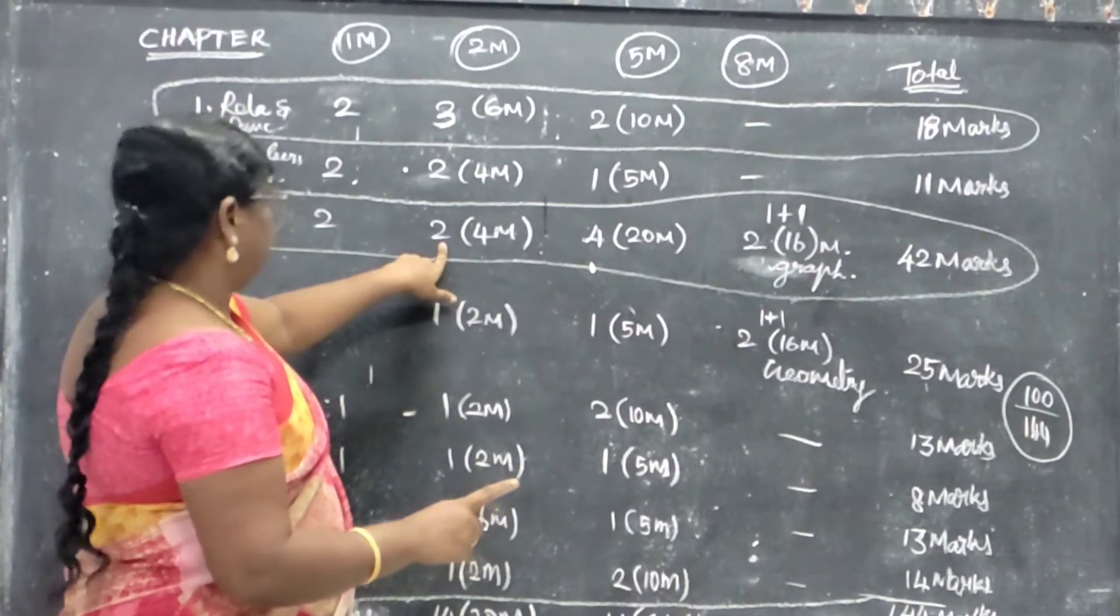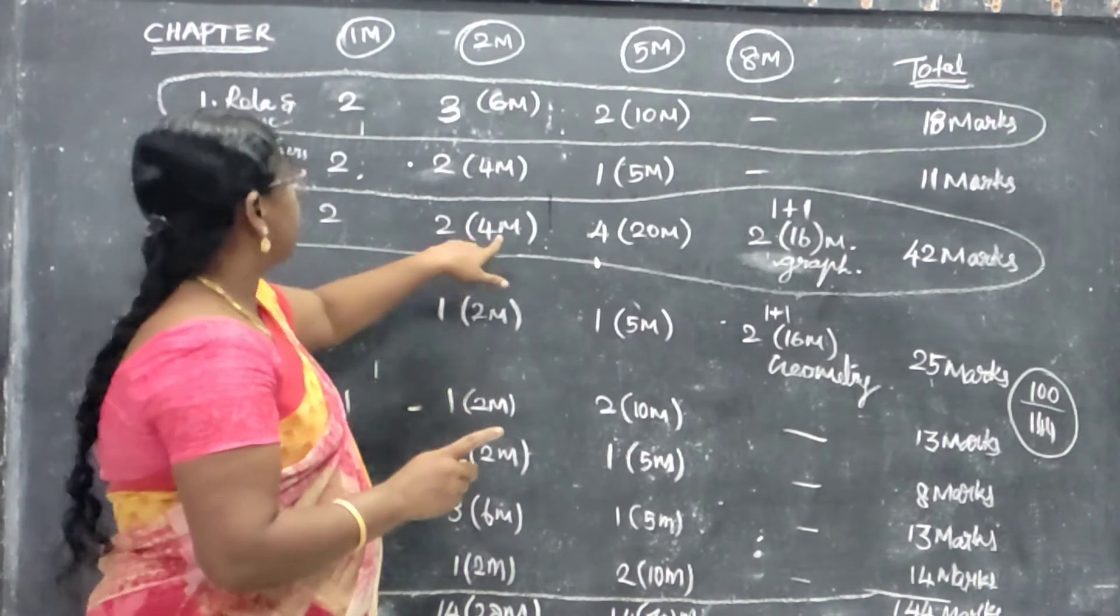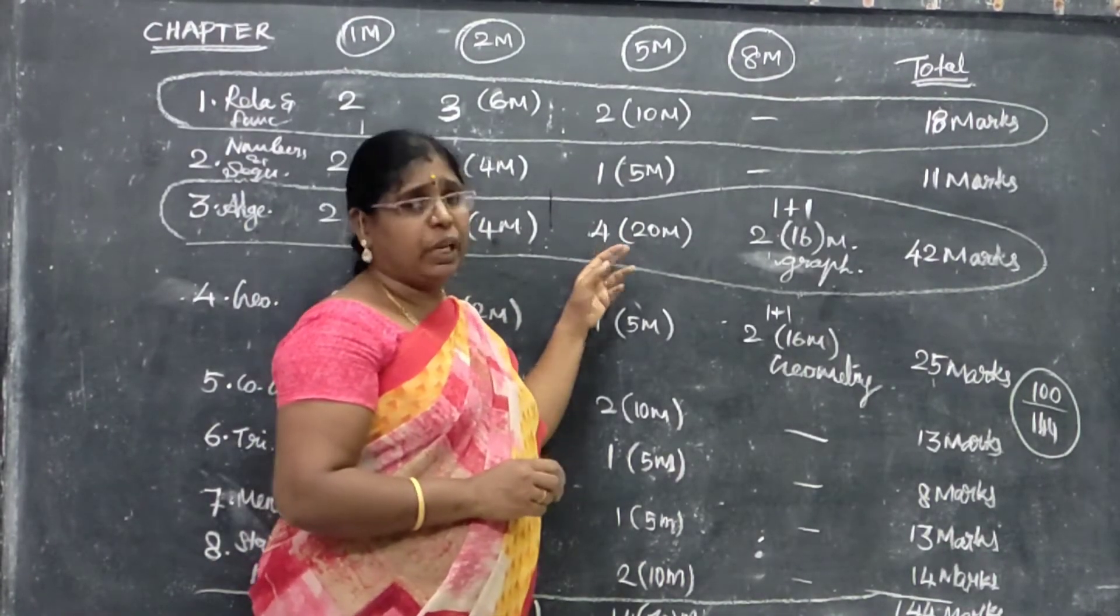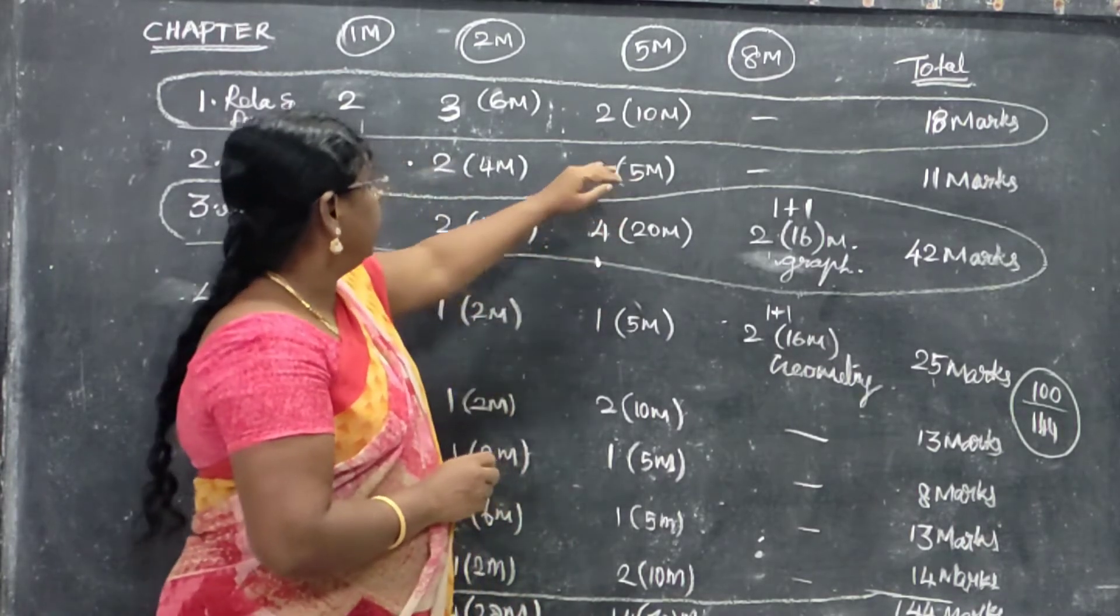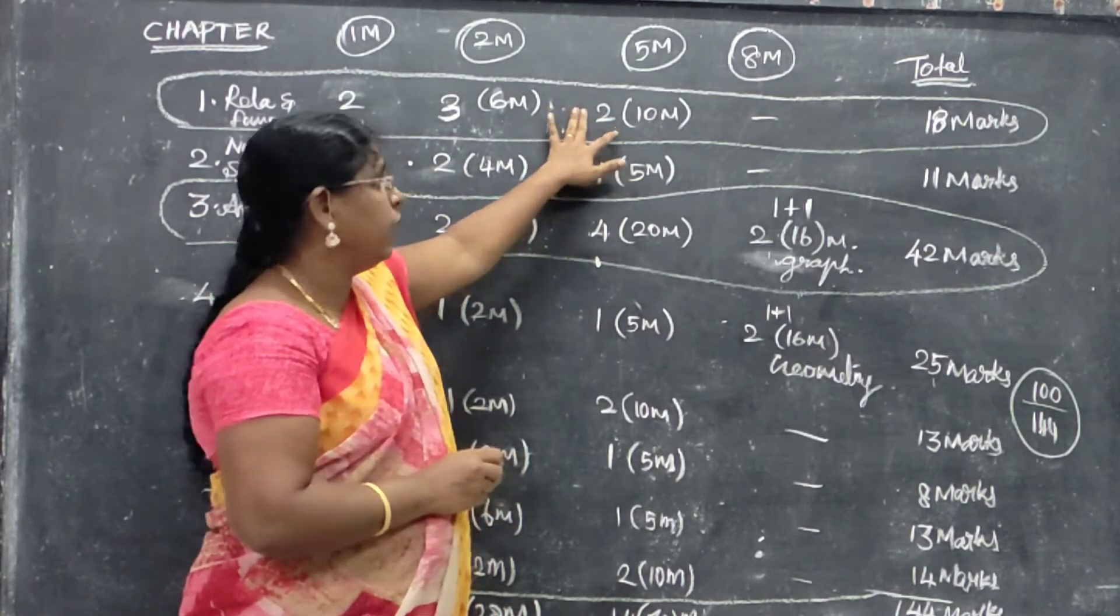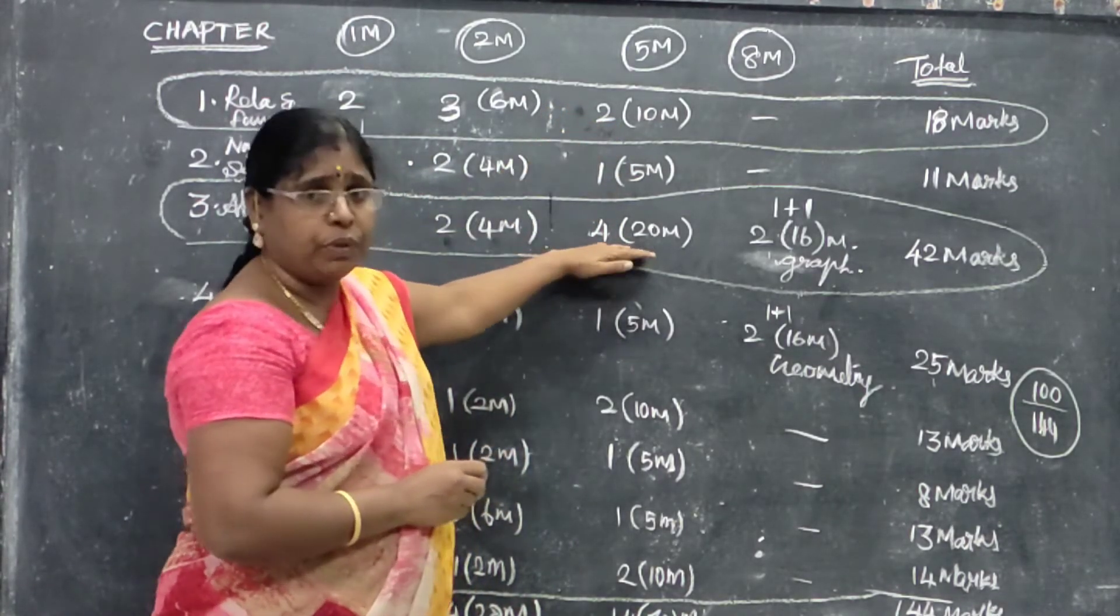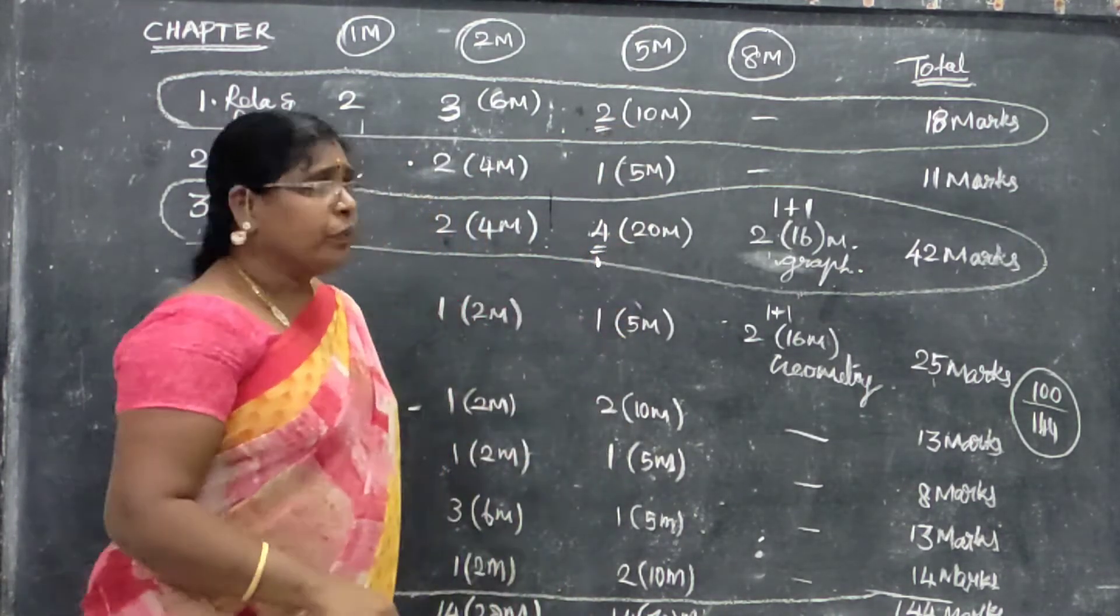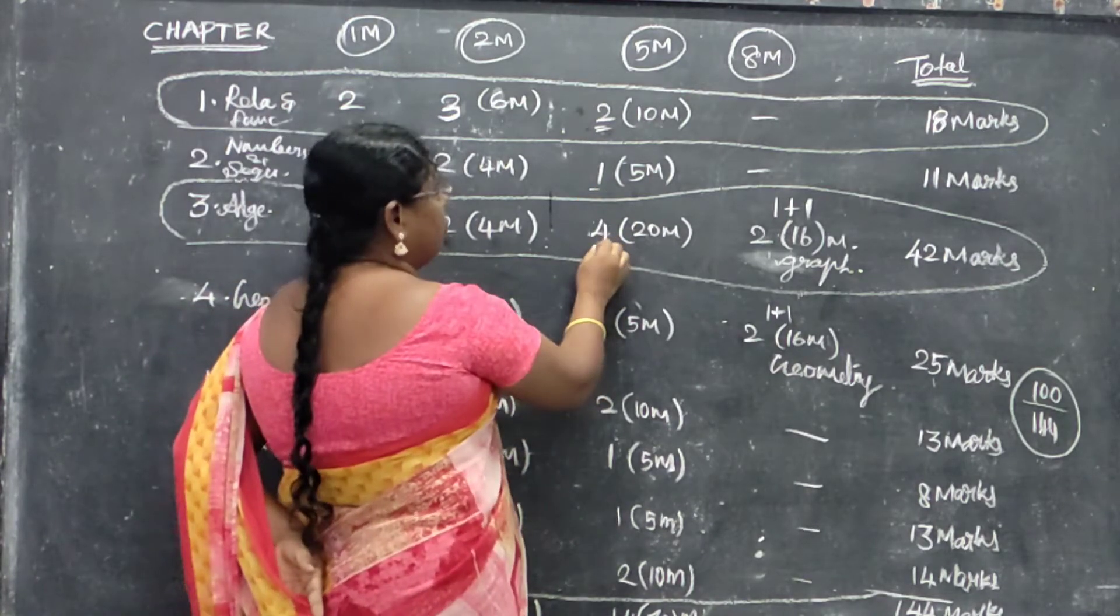2 mark is 2 questions and 4 mark is 4 mark. 5 mark is 4 mark. But here are 3 questions, here are 3 questions. In the first chapter we will have 3 questions. Here are 2 questions and here are 2 questions.